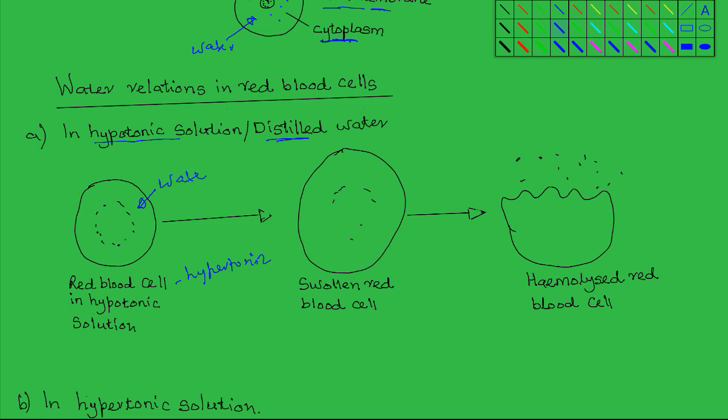So water moves into the cell by osmosis. As more and more water enters the cell, the cell tends to swell. And if this continues, with more and more water entering the cell, it will swell further and eventually burst. This is because the cell membrane is not strong enough to resist the outward pressure that is caused by the inflow of water.